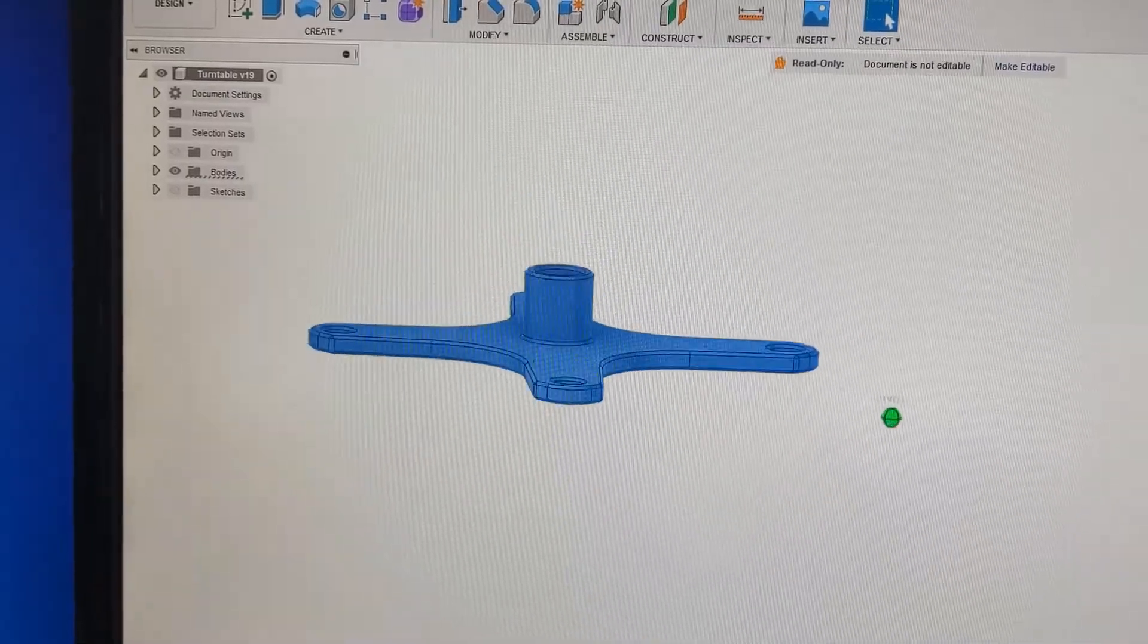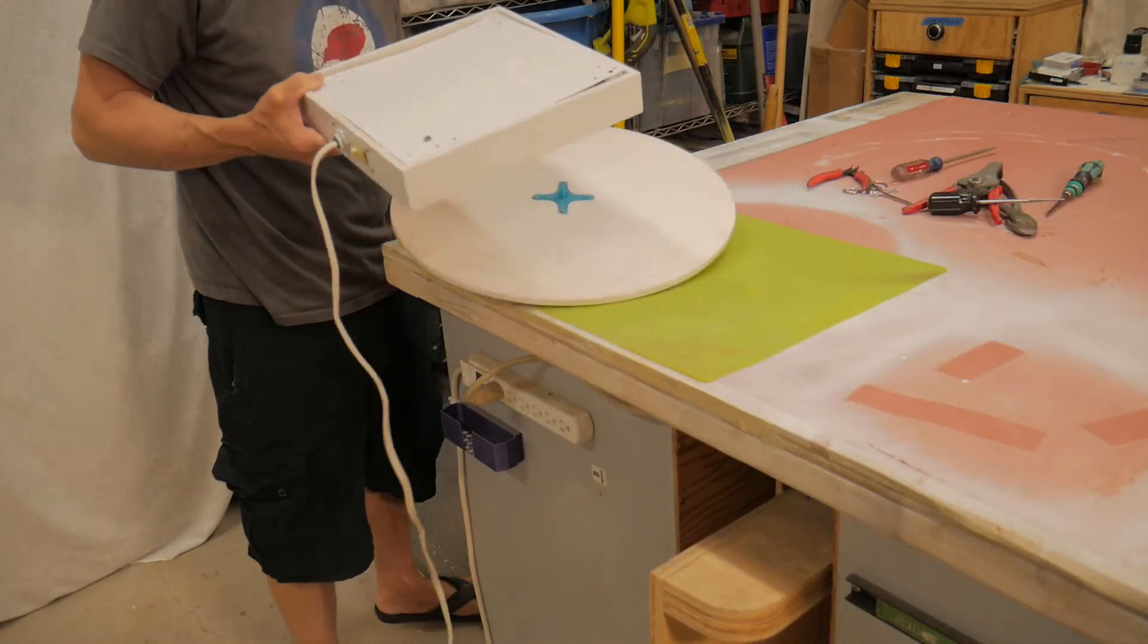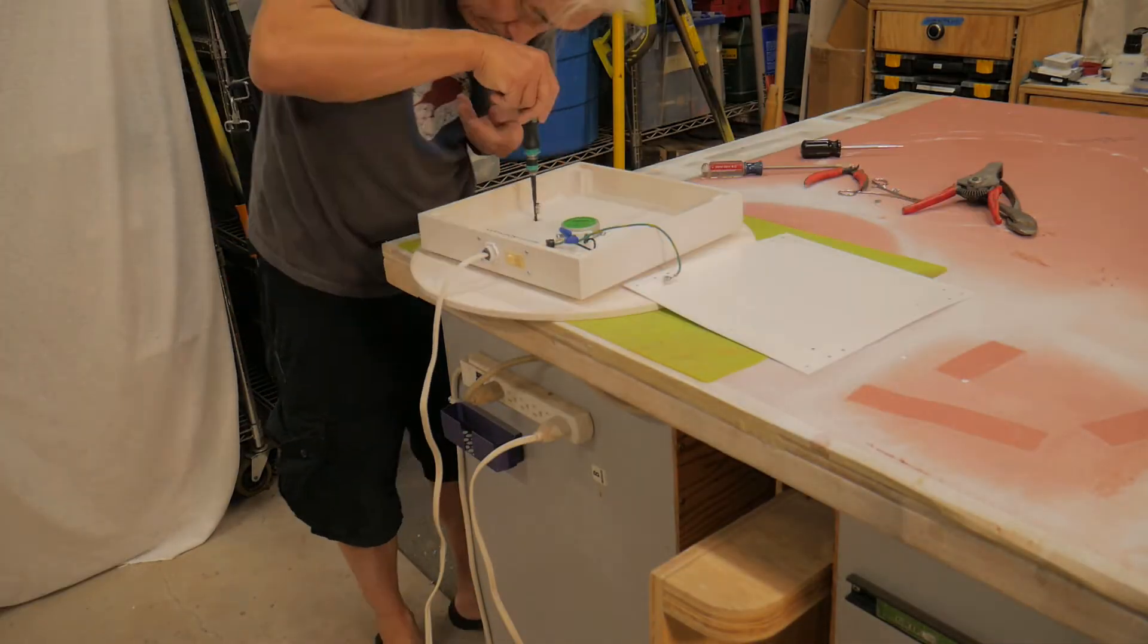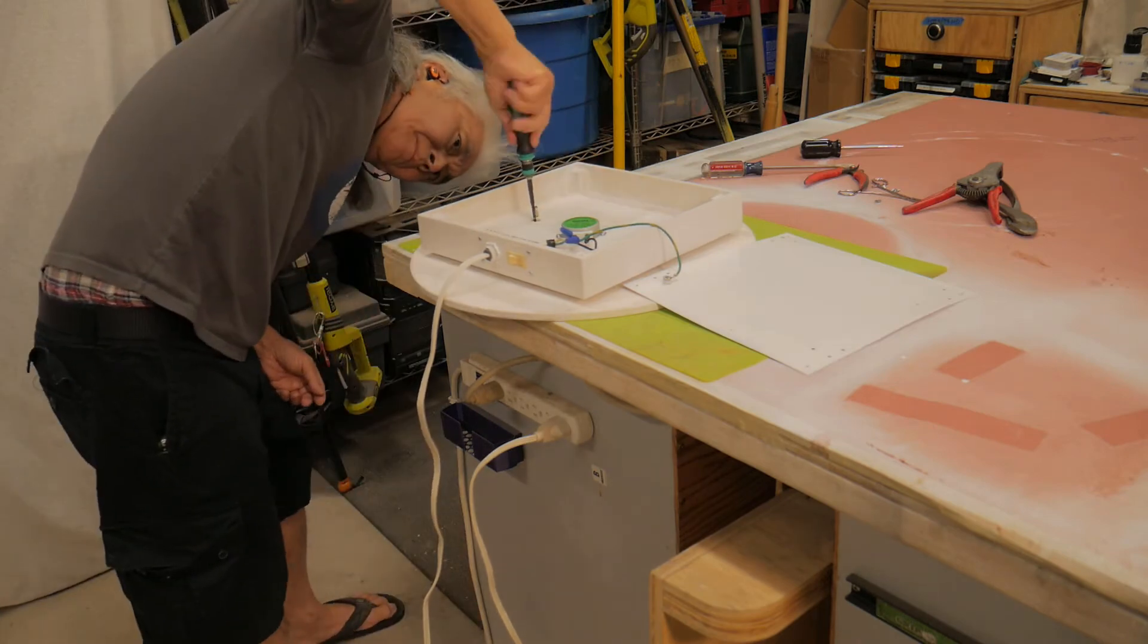You could see that little blue part is the platter coupler that I designed and 3D printed. Here I'm using the access hole to attach the platter.